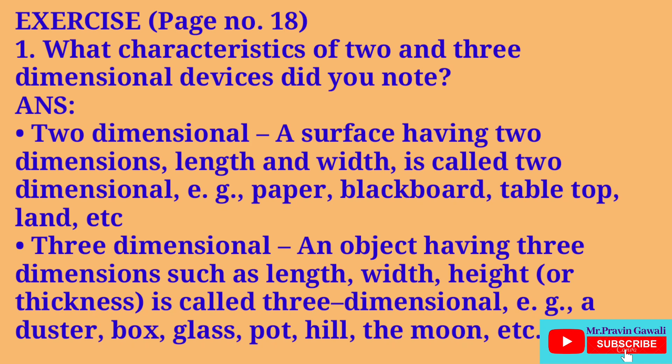The characteristics of 3 dimensional: an object having 3 dimensions such as length, width, and height or thickness is called 3 dimensional. For example, a duster, box, glass, pot, hill, the moon, etc.